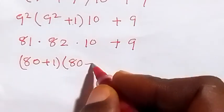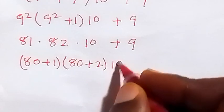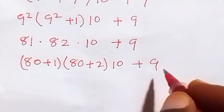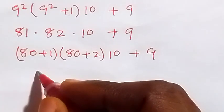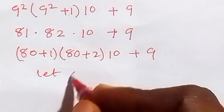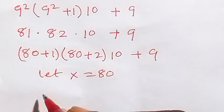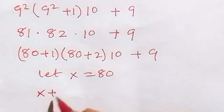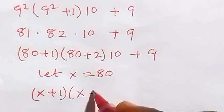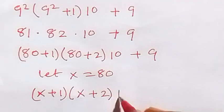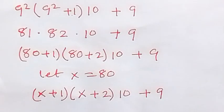From here let's represent 80 as x, so let x equal 80. This expression becomes x plus 1, multiplied by x plus 2, then multiplied by 10, plus 9.